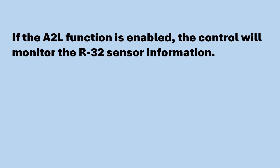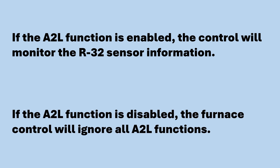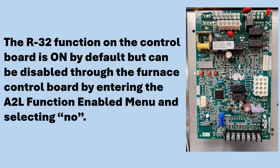If the A2L function is enabled, the control will monitor the R32 sensor information. If the A2L function is disabled, the furnace control will ignore all A2L functions. The R32 function on the control board is on by default, but can be disabled through the furnace control board by entering the A2L function enabled menu and selecting no.